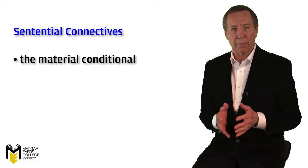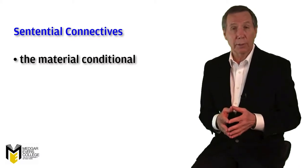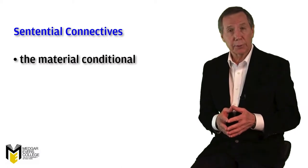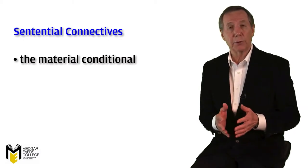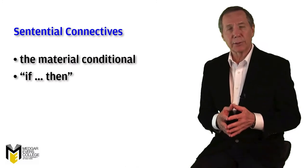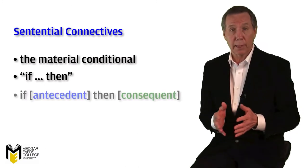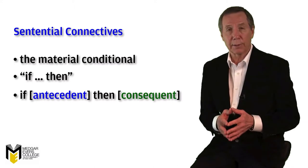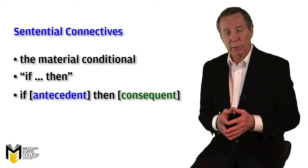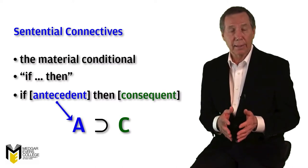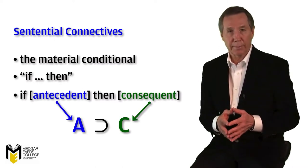Let's now look at the conditional, also known as material implication, which we express in English through the use of 'if...then.' It's a compound sentence that contains two parts: an antecedent that follows the 'if' and a consequent that follows the 'then.' So it looks like this: if, followed by the antecedent, then followed by the consequent.